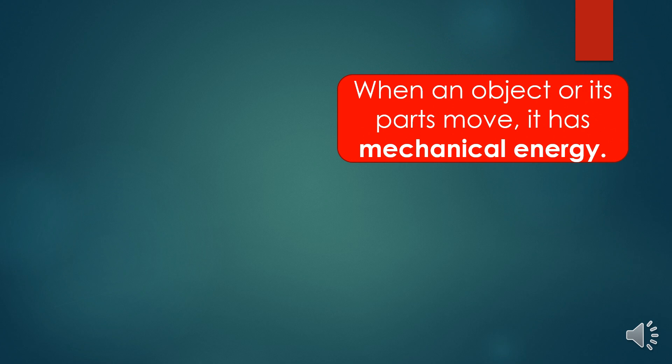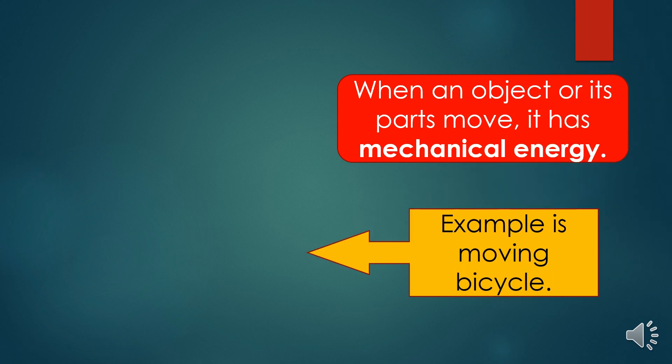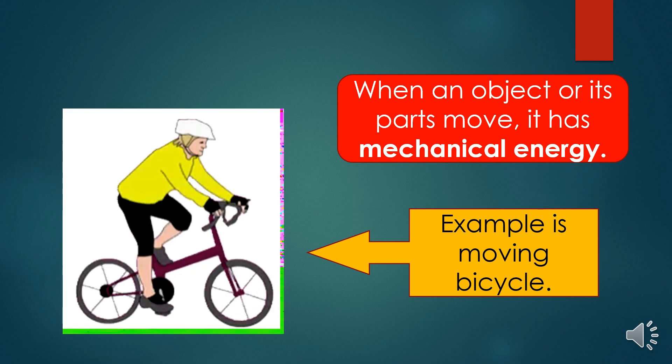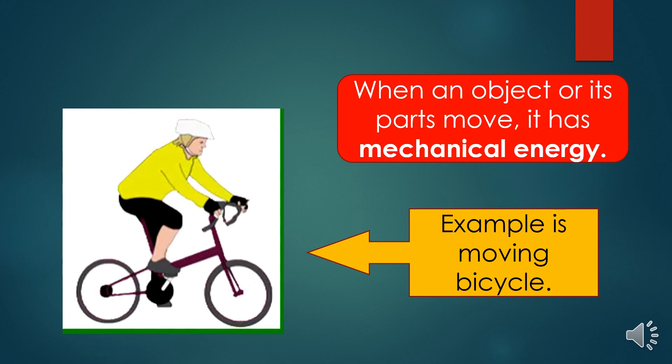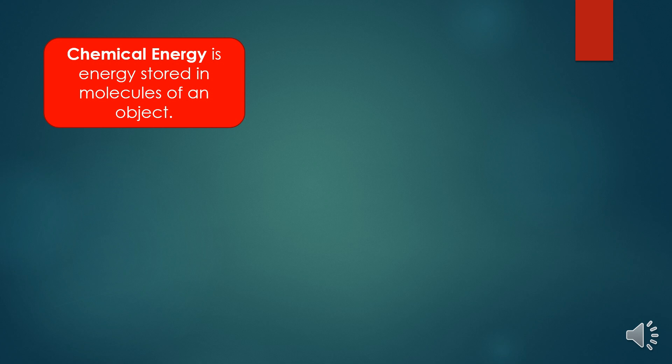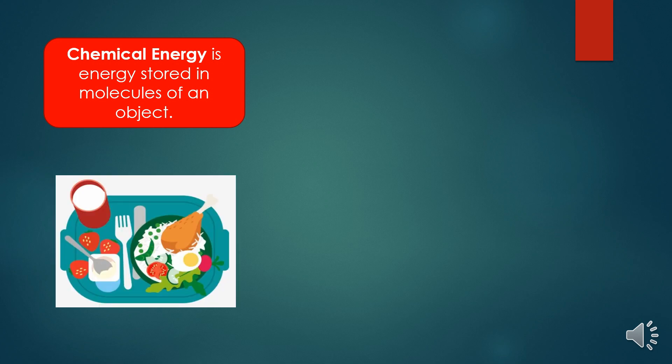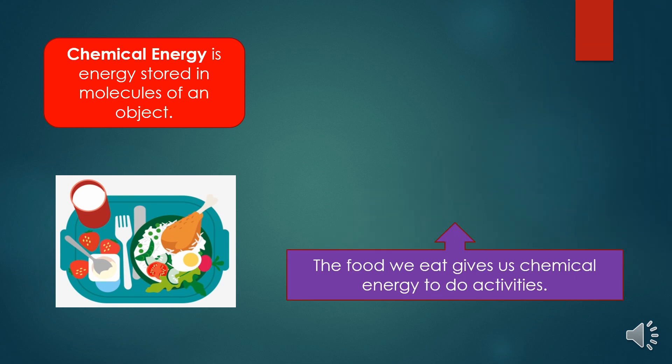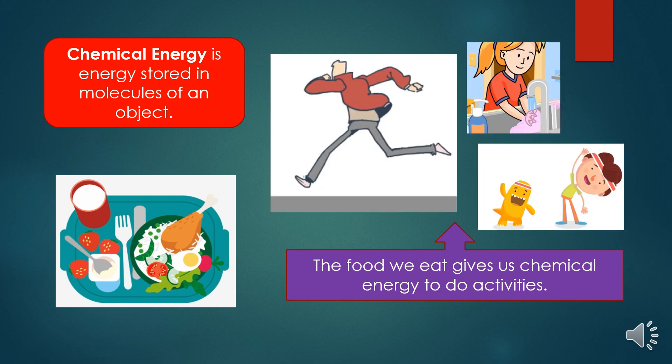When an object or its parts move, it has mechanical energy. Example is a moving bicycle. Chemical energy is energy stored in molecules of an object. The food we eat gives us chemical energy to do activities.